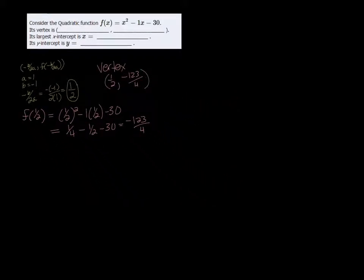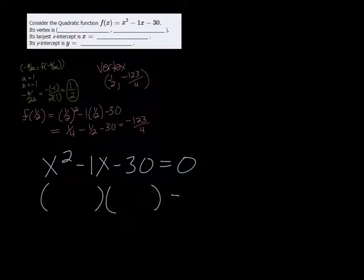All right, for the next part, what the largest x-intercept is. Finding x-intercepts, you're setting y equal to 0. So you're going to get x squared minus 1x minus 30 equals 0. And this one is a nice factorable one. So we have x minus 6 and x plus 5 are the factors.